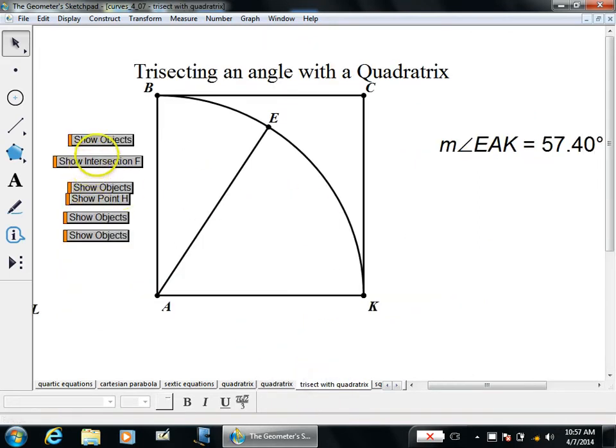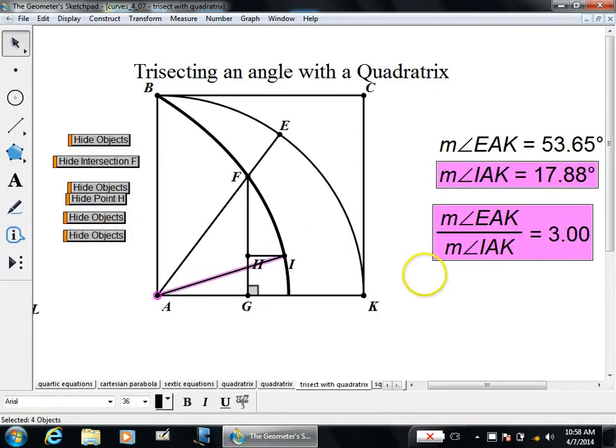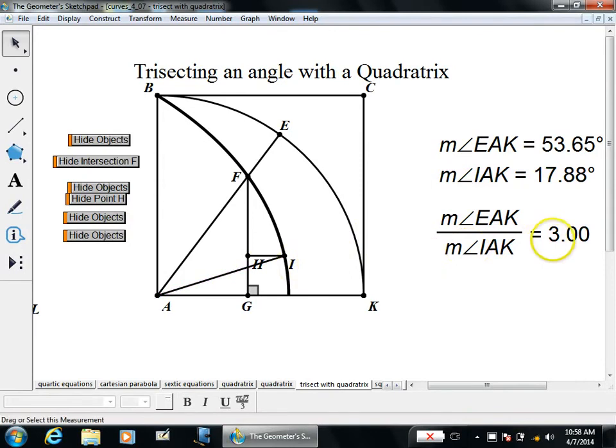To trisect an angle with a quadratrix is actually very easy. All you have to do is stick a quadratrix in this spot. Here's my angle. Get the intersection of the quadratrix with the side of the angle, drop down this perpendicular. Trisecting a line segment is possible, so I'm going to do it. Then I'm going to make a parallel line and find where that intersects the quadratrix. And if I do that all properly, this angle will be exactly one third of the original. It has to do with - the line here is always proportional to the angle.